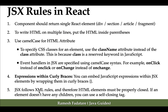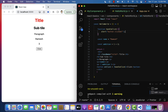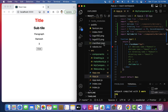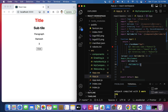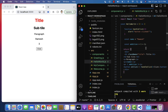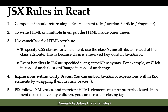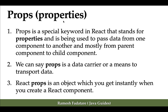Next rule: JSX follows XML rules, so HTML elements must be properly closed. If an element does not have any children, use a self-closing tag. For example, in app.js the HelloWorld component has no content inside it, so we use a self-closing tag. Make sure that whenever you use a component or HTML element in JSX, you close it. These are the important JSX rules to keep in mind when working with React. In the next lecture we'll look at props.